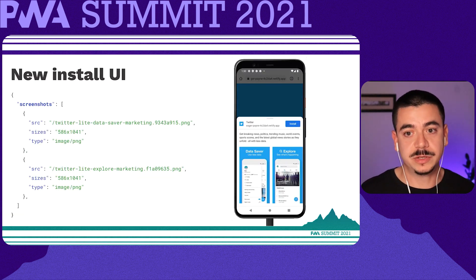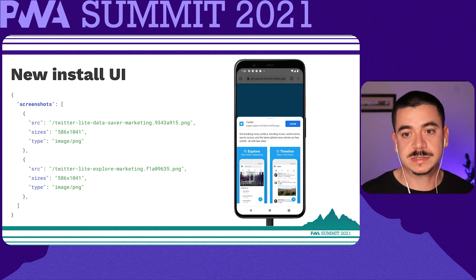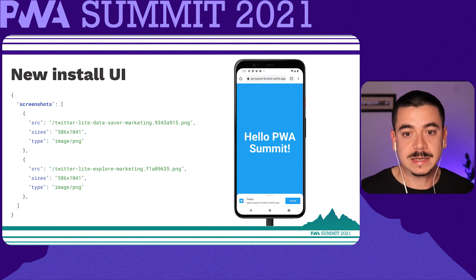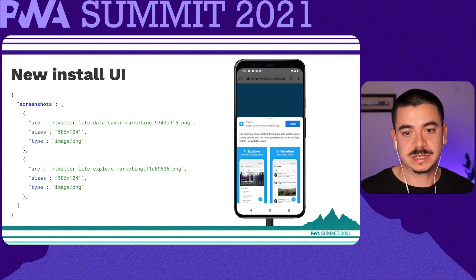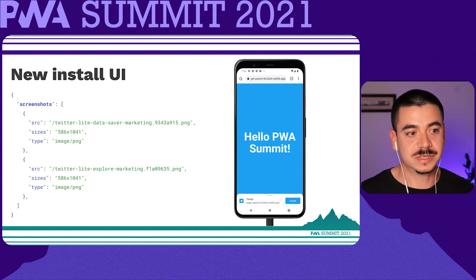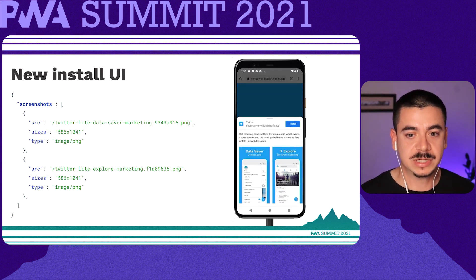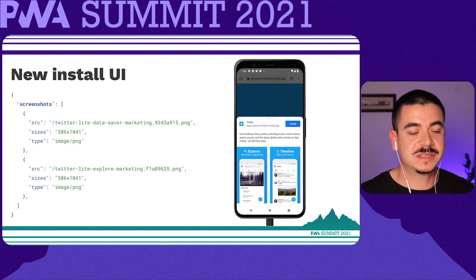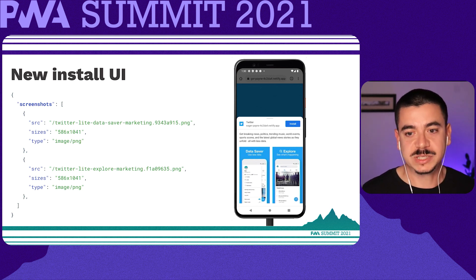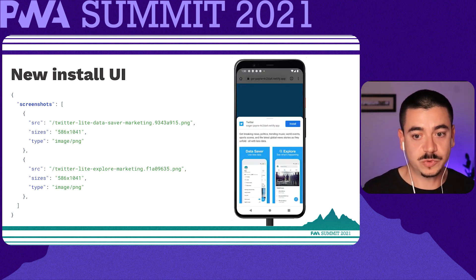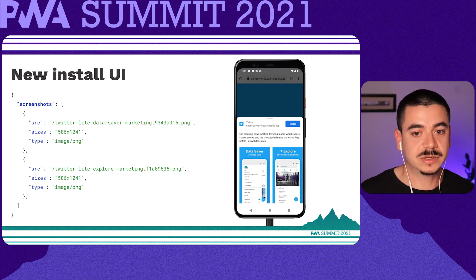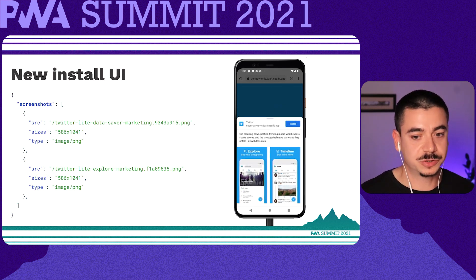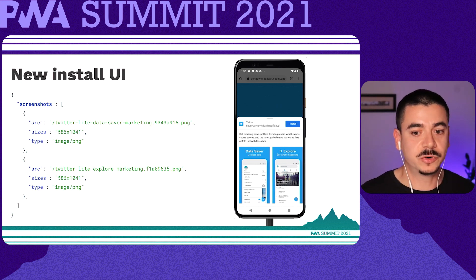There is a new beautiful PWA install UI now enabled for all users starting with Chrome 92 on Android — the screenshots property. The screenshots property is an array of image objects representing your application in common usage scenarios. Each object must include the source, a sizes property and the type of image. In Chrome, the image must meet certain criteria: width and height must be at least 320 pixels and at most 3840 pixels, the maximum dimension can't be more than 2.3 times as long as the minimum dimension, screenshots must have the same aspect ratio, and only JPEG and PNG image formats are supported.